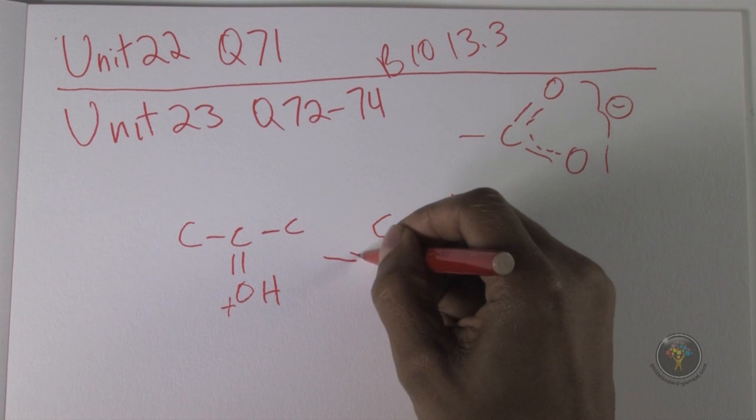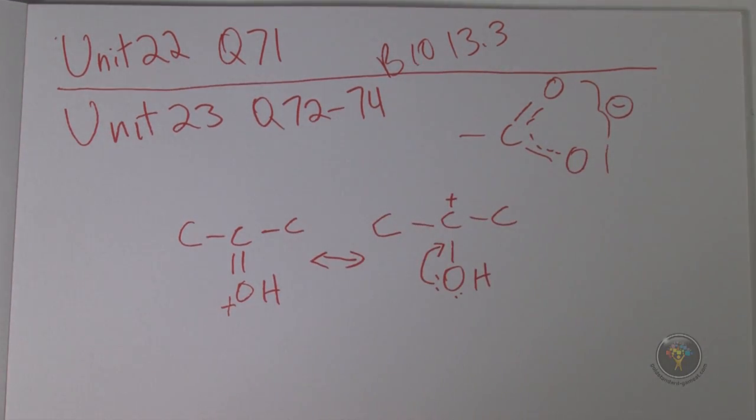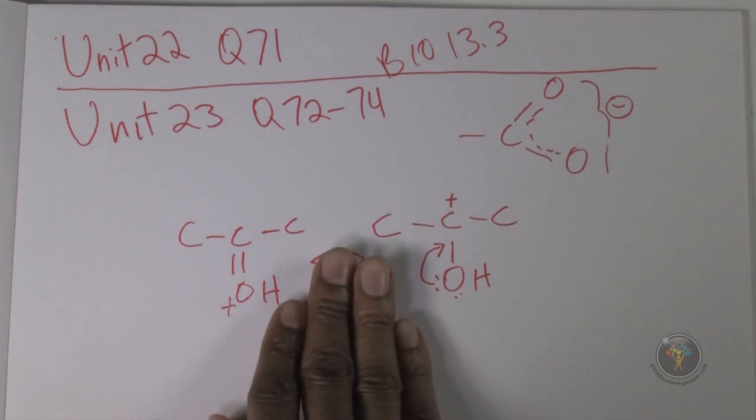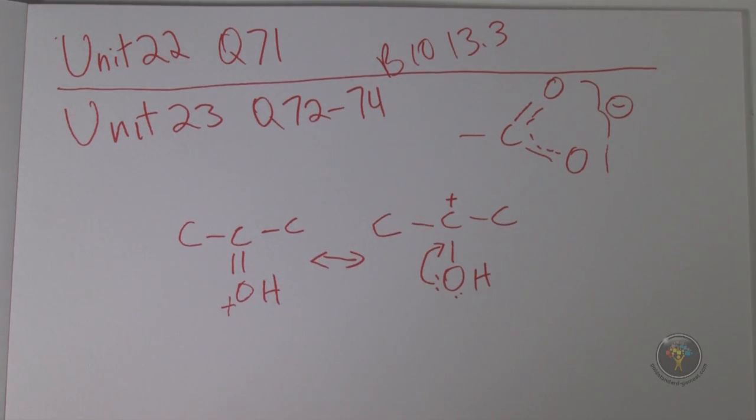Then looking at answer choice D, we have that same situation as answer choice A, where this is really just the flip of the molecule. If you just take the molecule, flip it the other way, you see that it lands perfectly on D. So the answer for 72 would be C.